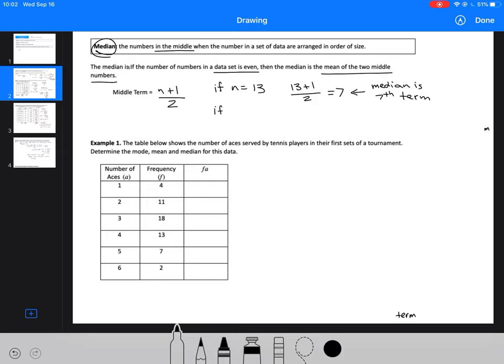And then if you have n equals 14, we get our n value to be 7.5. And so that means the median is going to be the seventh term plus the eighth term divided by 2, so right in the middle.